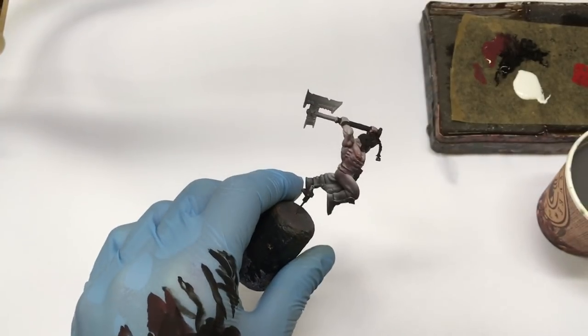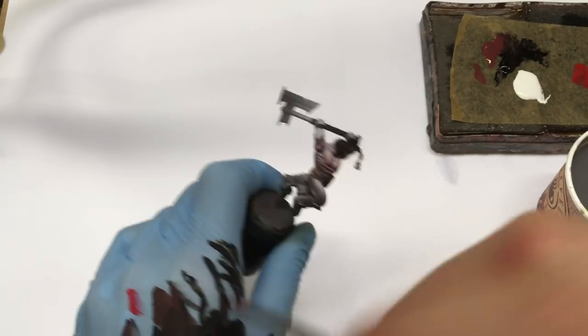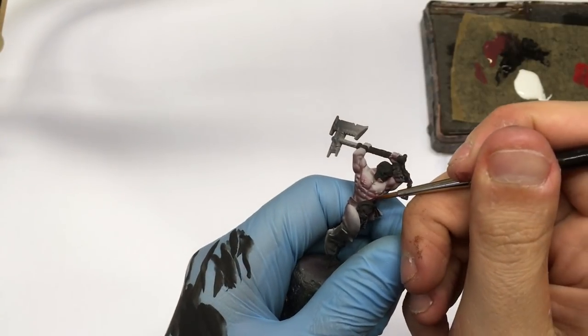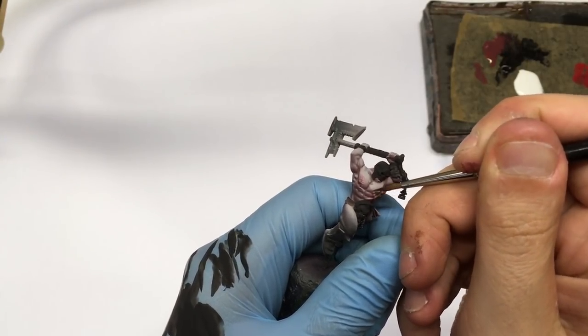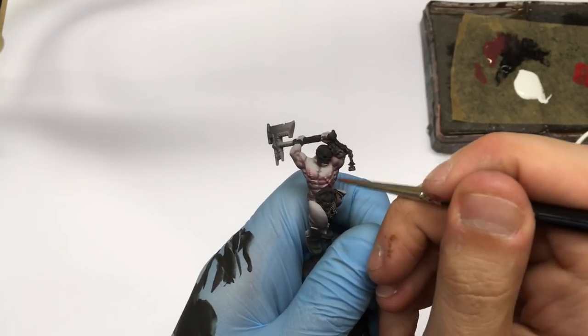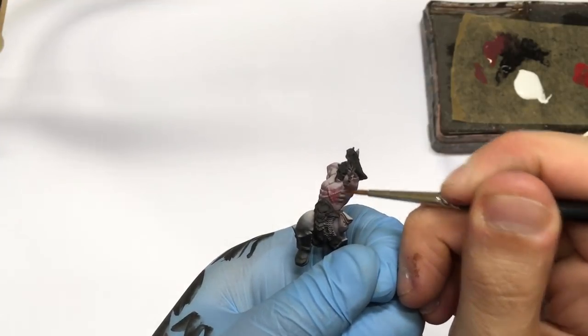Or actually, I don't know if realistic is a good word, but it will be definitely very visible, very distinguished from everything else, and it will add some interesting touch to the whole model. And it will look bloody, which is good for the Khorne guys.